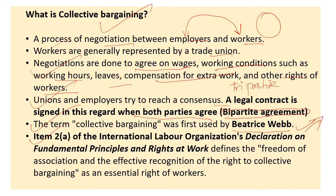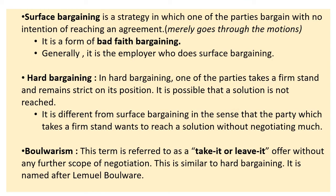Article 2a of the International Labour Organization's Declaration of Fundamental Principles and Rights at Work defines the freedom of association and effective recognition of the right to collective bargaining as an essential right of workers. You cannot stop somebody from organizing a trade union and doing collective bargaining — it is a right. We also learned about this in the Code of Discipline.